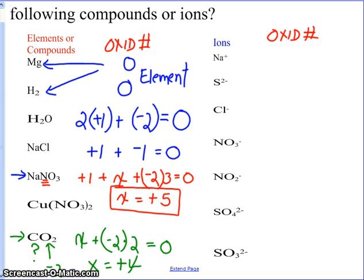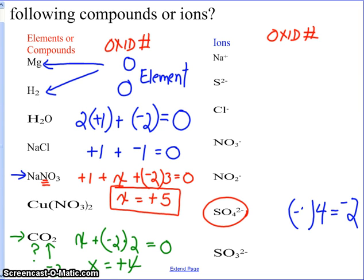Now let's try the sulfate ion, SO₄²⁻. Since it's an ion, the total charge has to equal minus two instead of zero. Since there are four oxygens, each with an oxidation number of minus two, and only one sulfur, the oxidation number on the sulfur has to be plus six.